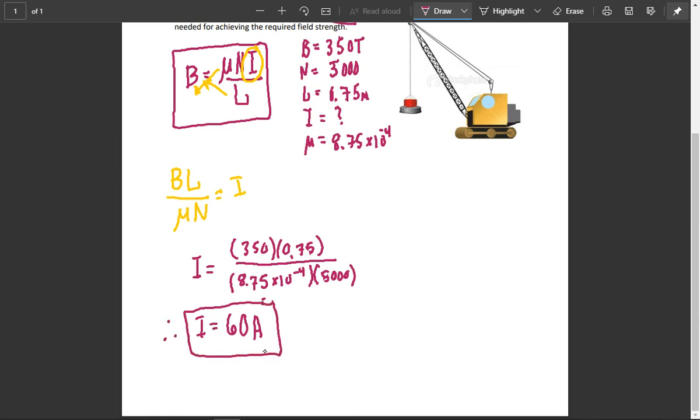So again, when you're using your calculator, when you're typing in the 8.75, there's often an EE button that you would press or an EXP button that you would press.